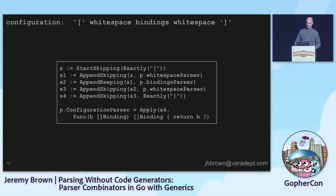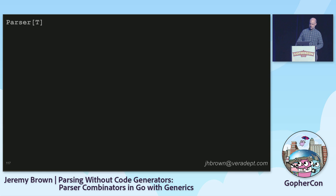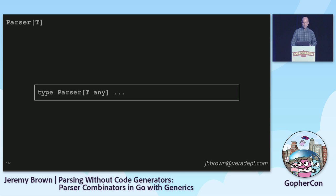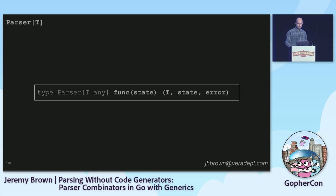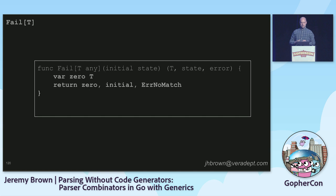Now let's look at how all of those composition and creation things work. We start with a big reveal: the type of a parser is actually a function — a parser-shaped function. It's a function that takes a state and returns either a value of its parsing type and a new state, or an error. That's it. So let's look at the simplest parser: `fail`. It's defined as a parser-shaped function — takes a state, returns a value and an error. And since it always fails, all it does is return a non-nil error: `ErrorNoMatch`. That is a parser that always fails.